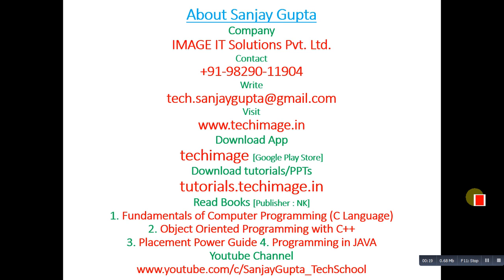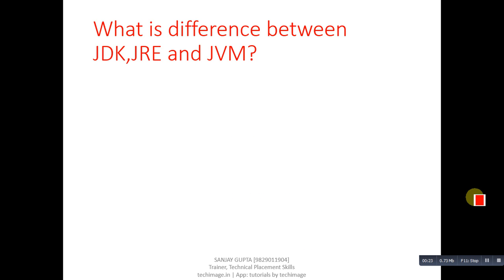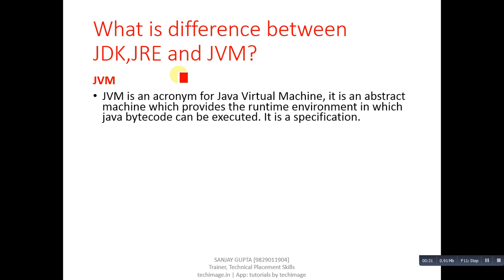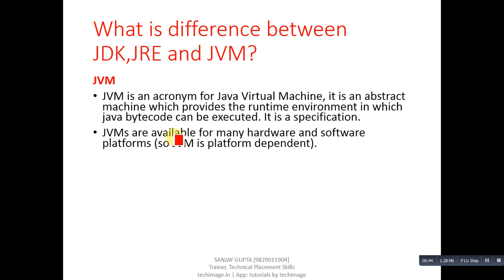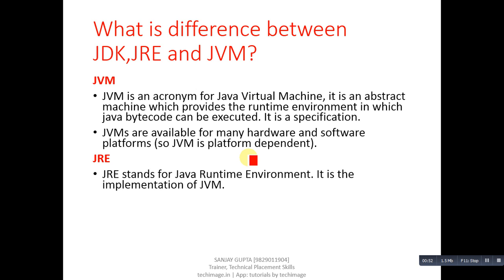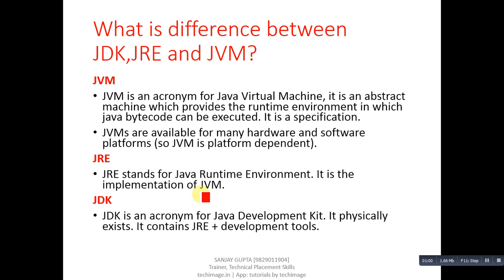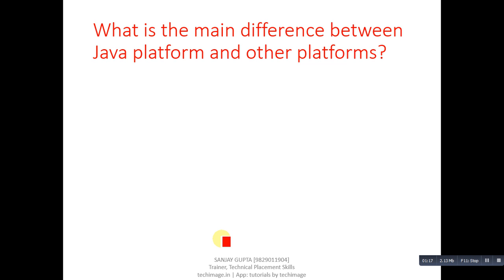The first question is: what is the difference between JDK, JRE, and JVM? JVM is an acronym for Java Virtual Machine — it is an abstract machine which provides the runtime environment in which Java bytecode can be executed. It is a specification and is platform-dependent. JRE stands for Java Runtime Environment and is the implementation of JVM. JDK stands for Java Development Kit — it physically exists and contains JRE plus development tools.